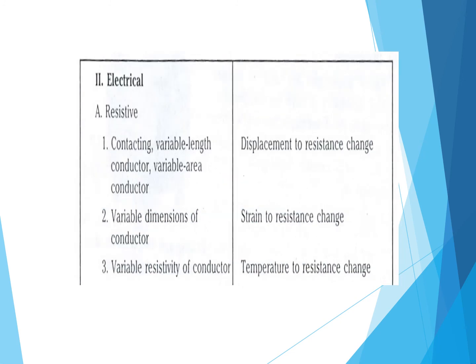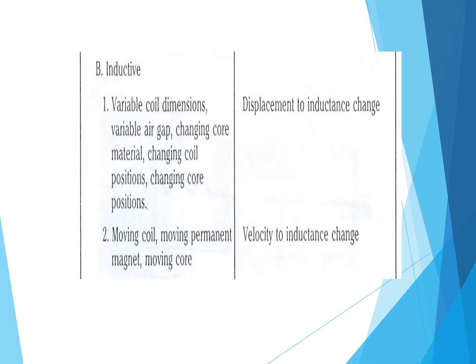In electrical type — resistive: contacting type, variable length conductors, and variable area conductors convert displacement to resistance change. Variable dimensions of conductors convert strain to resistance. Variable resistivity of conductors converts temperature to resistance. In inductive type: variable coil dimensions, variable air gap, changing core materials, changing coil positions, and changing core positions all convert displacement to inductance. Moving coil, moving permanent magnet, and moving core types convert velocity to inductance change.